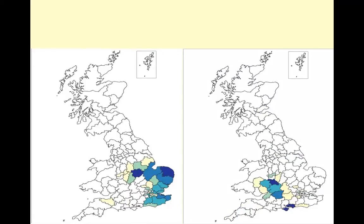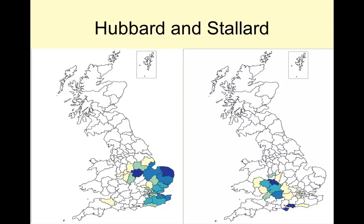Here's another - we've got one group located really in East Anglia and then the other one located in the West Country. We've got Dan Hubbard on the left and Dan Stallard on the right, looking at that distribution and thinking about where our families are coming from.